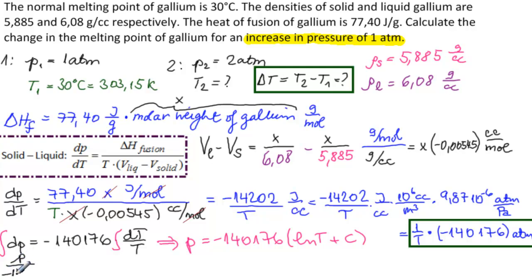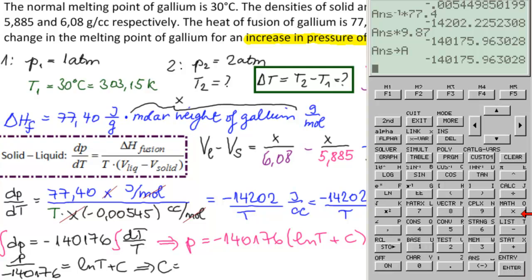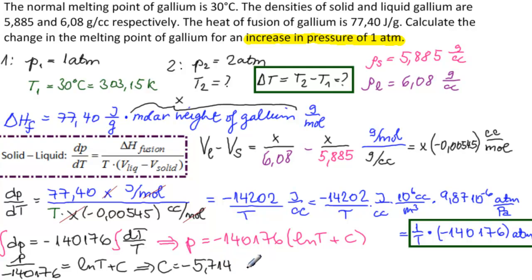We have p over minus 140176 equals ln of T plus c. Substituting p1 to 1 and T to 303.15, we will get c equals 1 over this minus ln of that. Let's do that with our calculator. Let's put this in storage, put it in A. We need 1 over that, minus ln of 303.15. And we get that c equals minus 5.714.